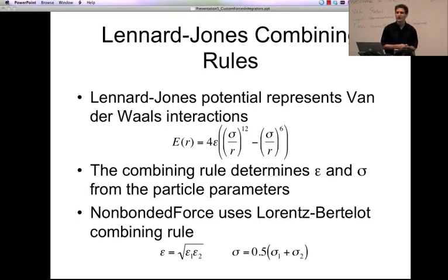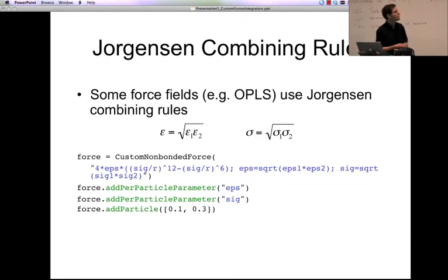And non-bonded force uses what is called the Lorentz-Berthelot rules. So it uses the geometric mean of the epsilons and the arithmetic mean of the sigmas. This is very common. For example, it is what the AMBER force fields all use. And this is what it does. But some force fields use other ones. For example, the OPLS force field uses what's called the Jorgensen combining rules, where you take the geometric means of both sigma and epsilon. So what do you do if you want to implement OPLS, given that non-bonded force uses a different combining rule? Well, one option is you just say, oh, whatever. The combining rule is really going to make very little difference in the force. And this is true. So let's just go and use the built-in combining rule, and that will be fine. That's one option. But another option is to say, well, let's just implement this combining rule. No problem.